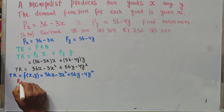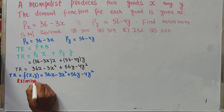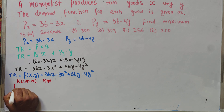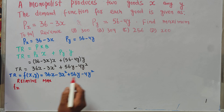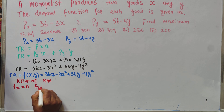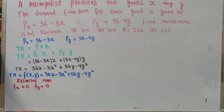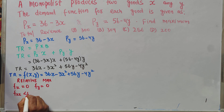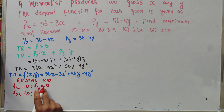The conditions for a relative maximum are: First condition — take the first partial derivative with respect to x and set it equal to zero (f_x = 0), and similarly the first partial derivative with respect to y equals zero (f_y = 0). These give the critical points. Second condition — the second-order direct partial f_xx must be less than zero, and f_yy must also be less than zero.